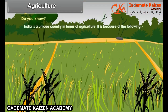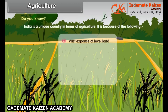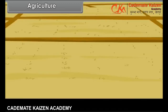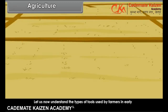India is a unique country in terms of agriculture because of the following: vast expanse of level land, rich soils, wide climatic variations, ample sunshine and long growing season.